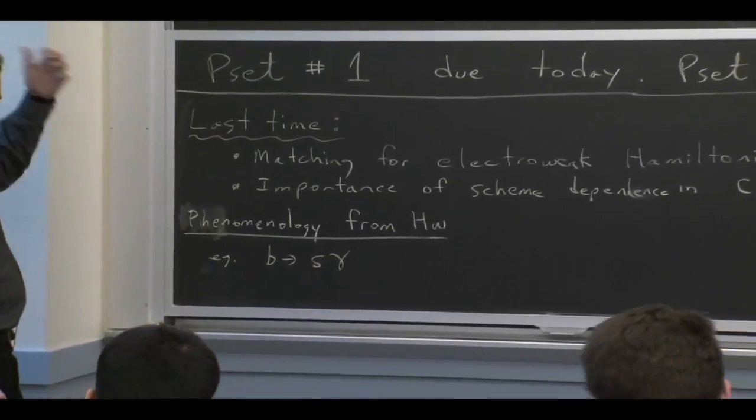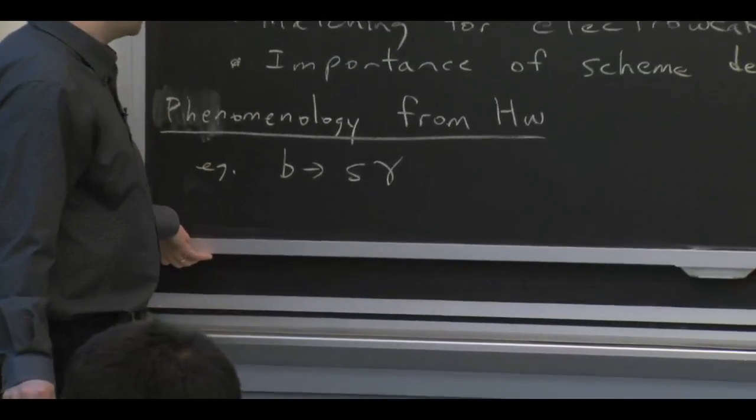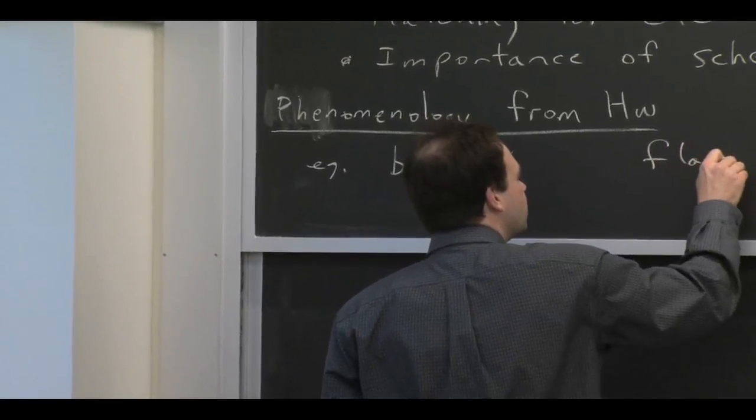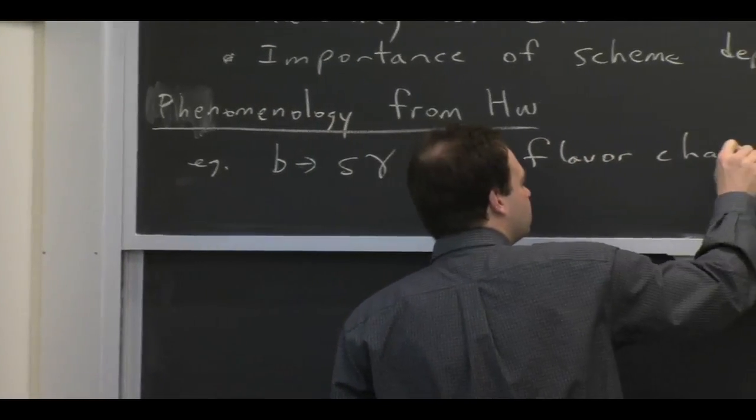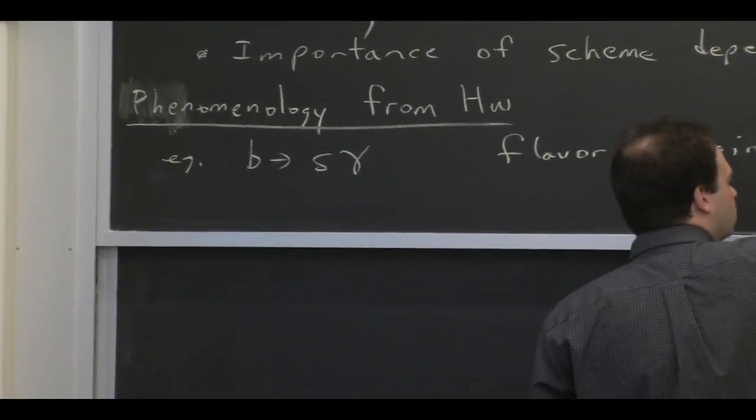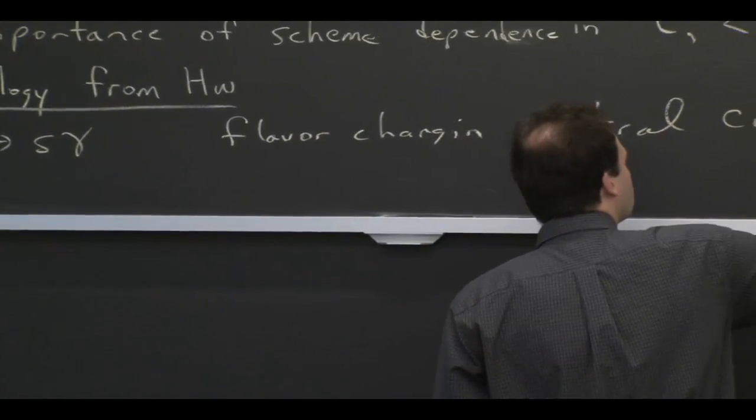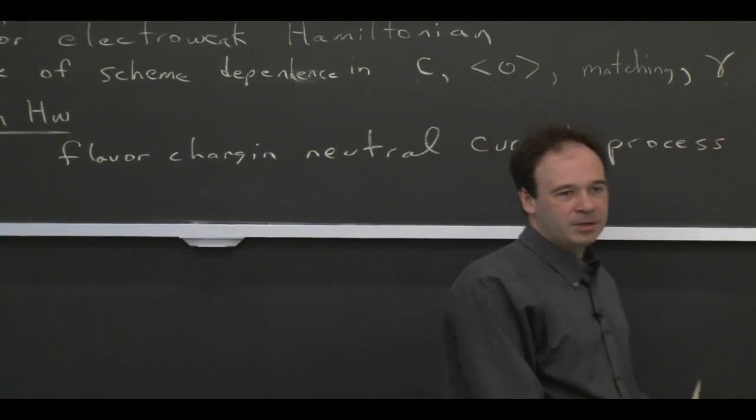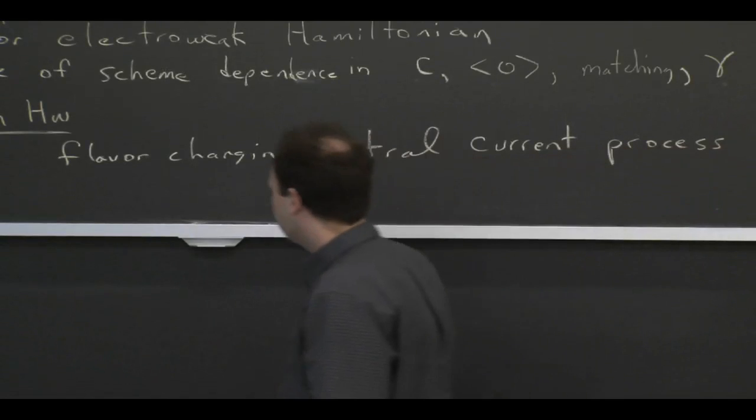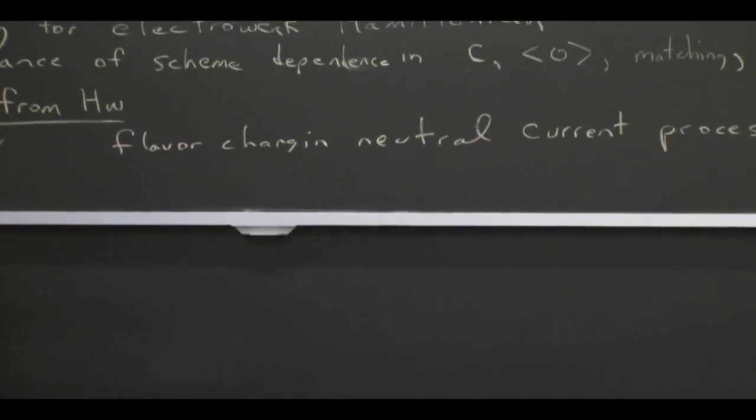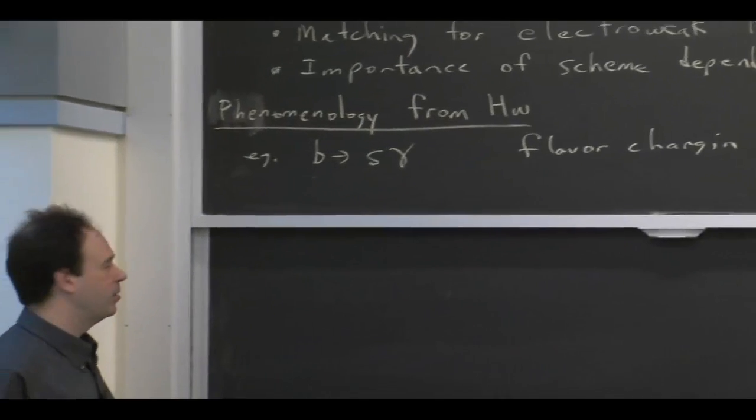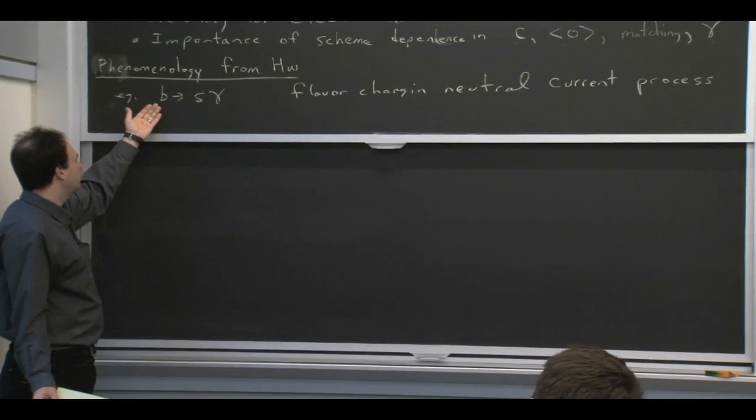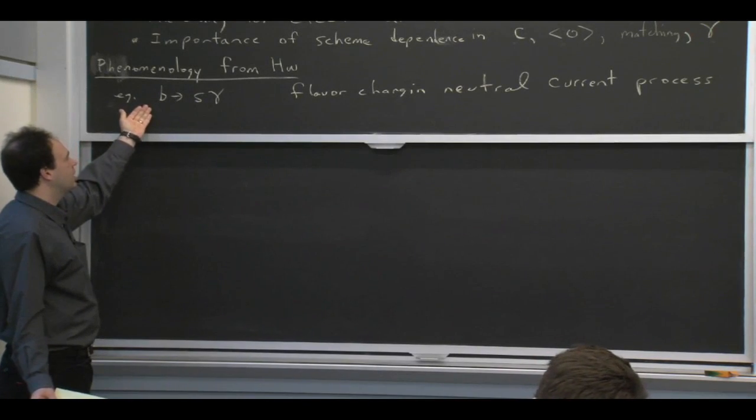So a nice example of that is B→sγ. It's a neutral current process. It doesn't happen in the Standard Model at tree level. And therefore, what that means is that it's sensitive to loop corrections. Since it doesn't happen at tree level, it's sensitive to loop corrections. We talked about a channel with B to C U bar D, but this is very analogous. We have a B meson in the initial state, B quark in the initial state. So it's the same scales in the problem.